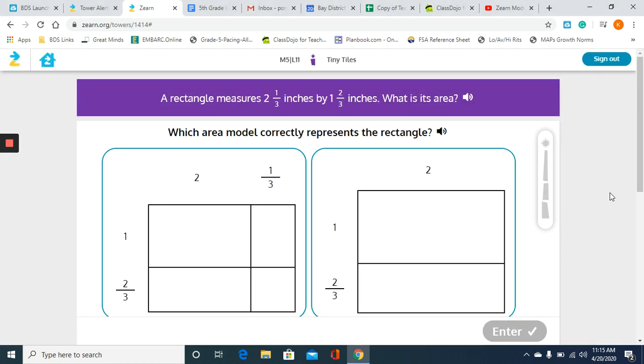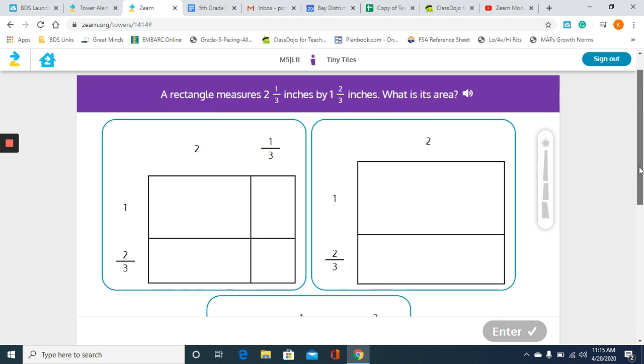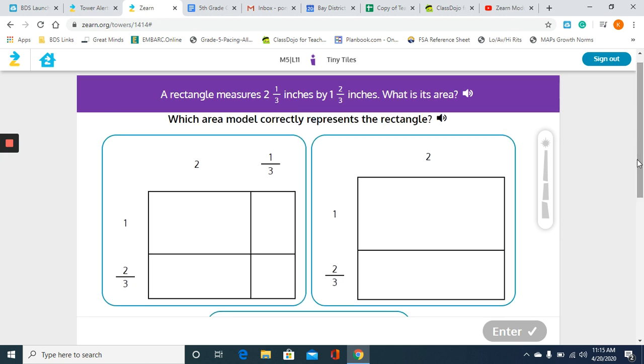Our first question says a rectangle measures 2 and 1/3 inches by 1 and 2/3 inches. What is its area? They want us to find the area model that correctly represents the rectangle. So we're going to find our area model that has 2 and 1/3 and also 1 and 2/3. This first one has 2 and 1/3, has 1 and 2/3, so that one looks to be correct.